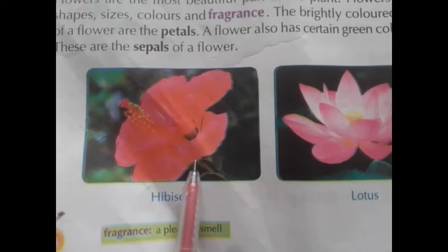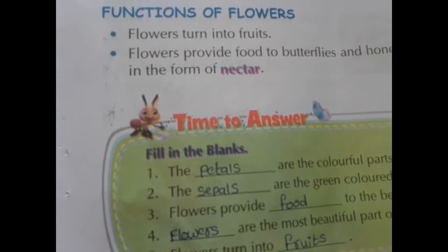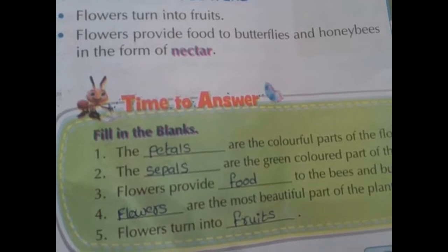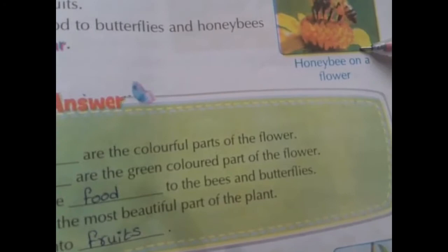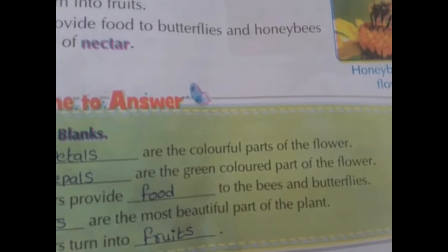What are the functions of a flower? The flowers turn into fruits. Flowers also provide food to butterflies and honeybees in the form of nectar. A honeybee falls on the flower and takes the nectar — that food from the flower is called nectar.